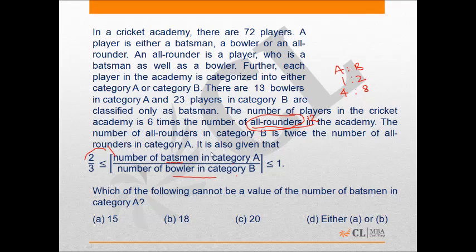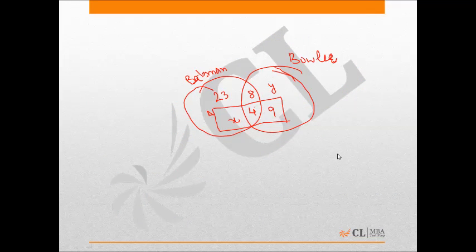We can understand this by the following diagram. The first circle represents the batsmen and the second circle represents the bowlers, and the intersection of both is all-rounders. There are a total of 12 all-rounders: 4 in category A and 8 in category B. I have drawn a rectangle in this Venn diagram which represents the people in category A.